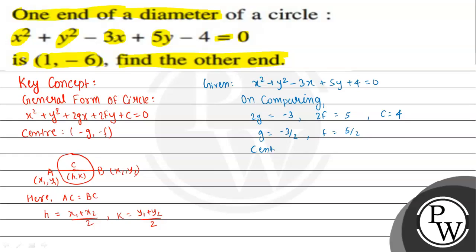The circle's center is at (-g, -f) = (3/2, -5/2). Let A be the given end at (1, -6), and B be the other end at (x, y) that we need to find.